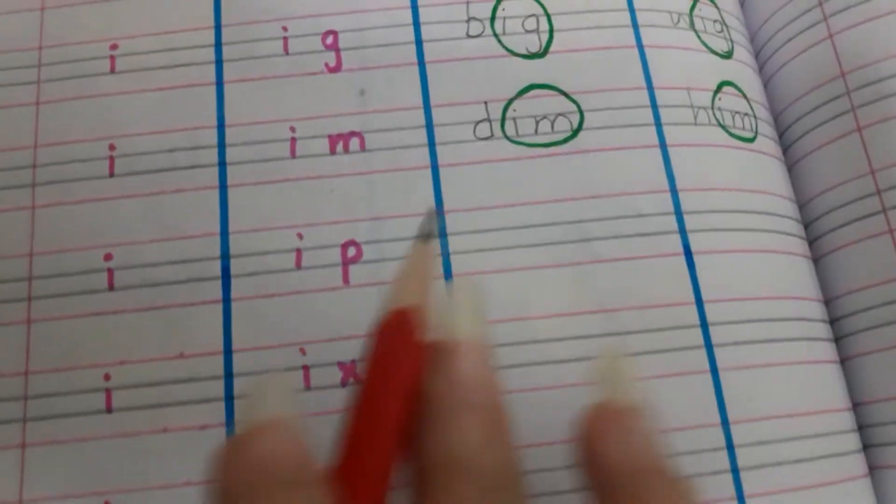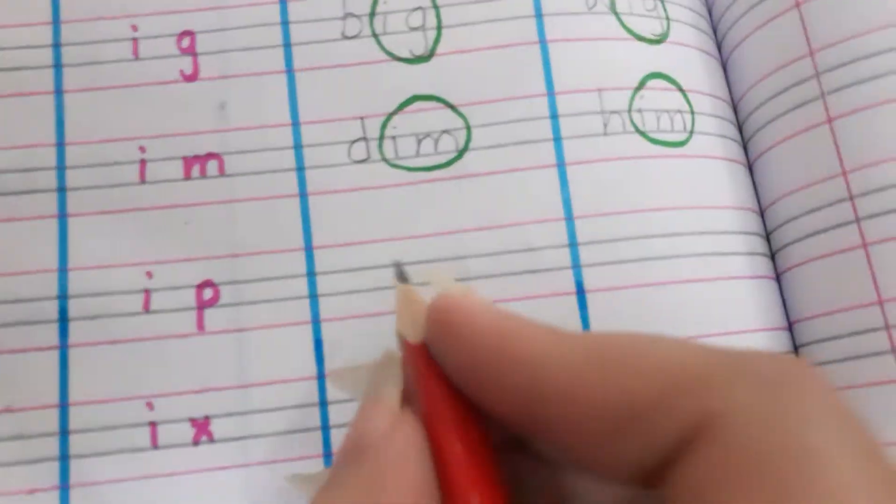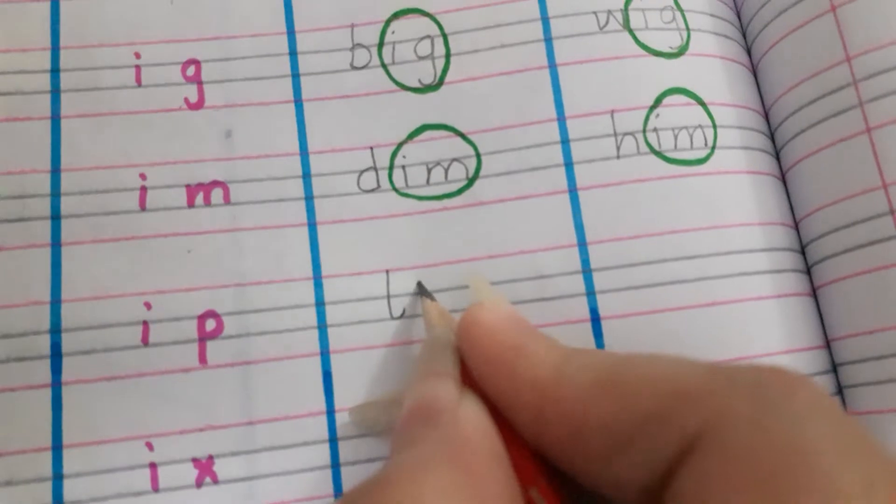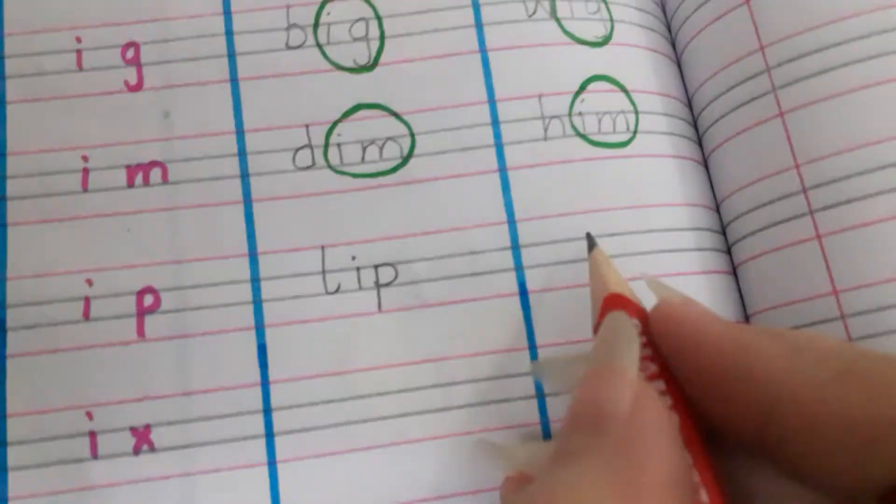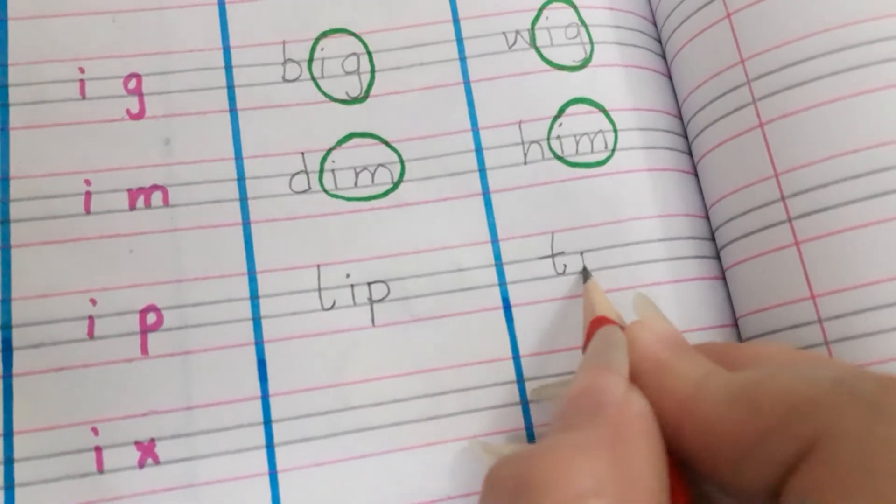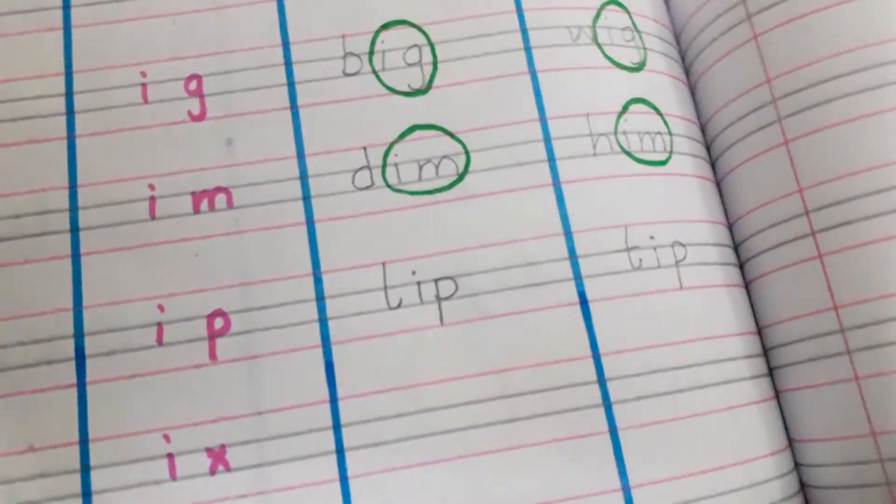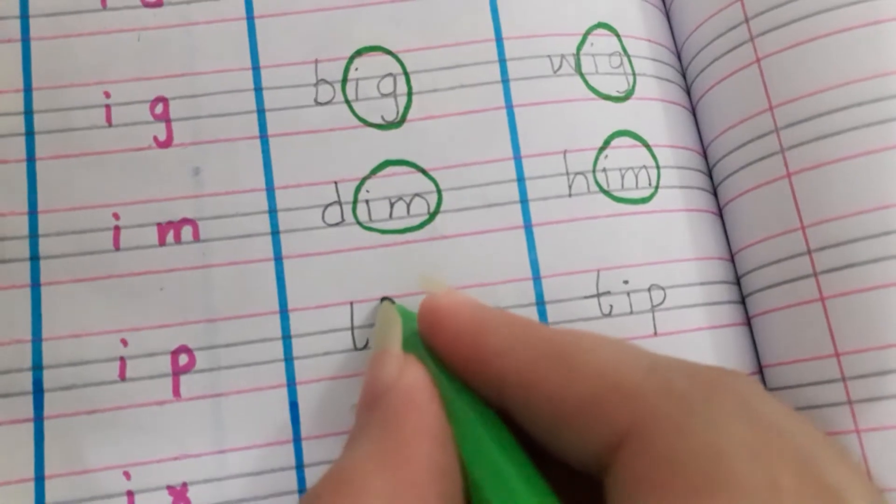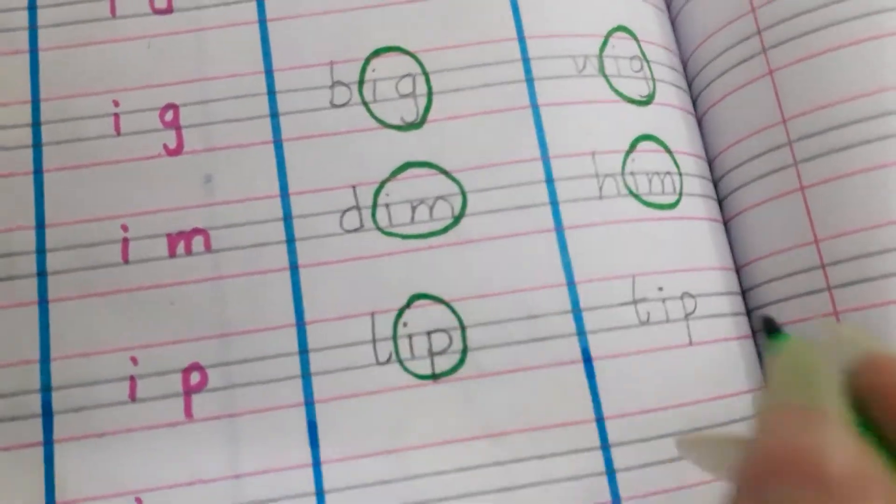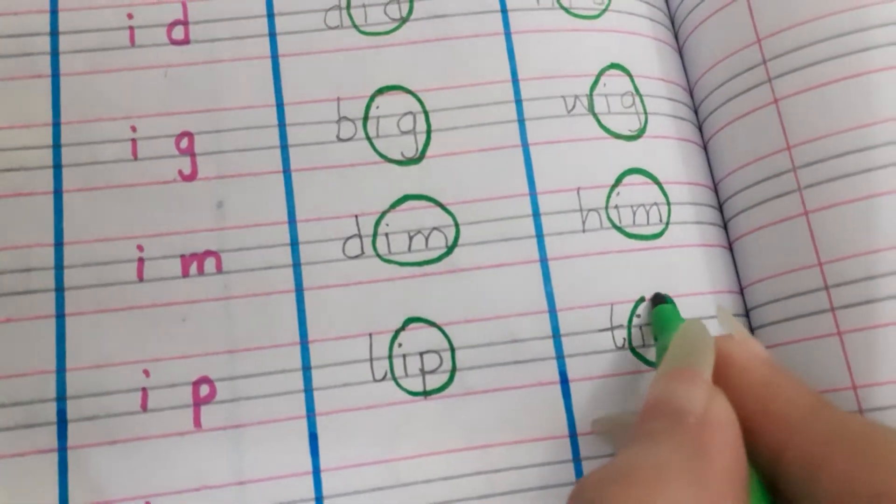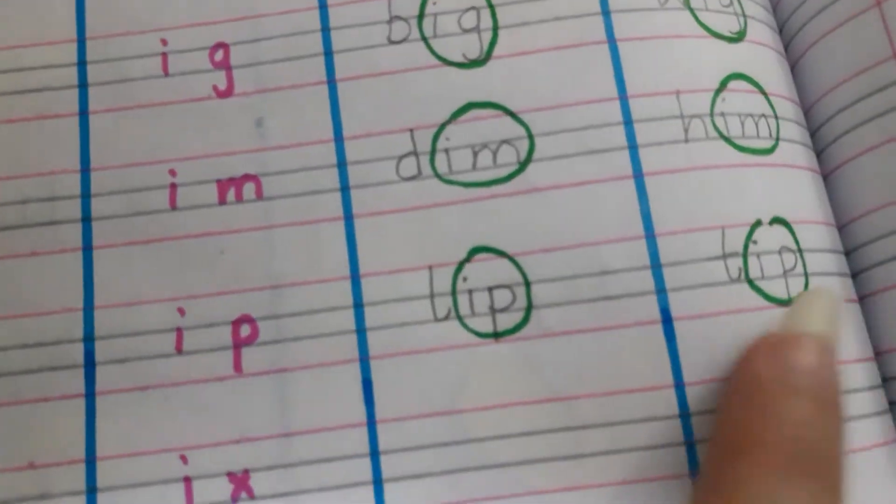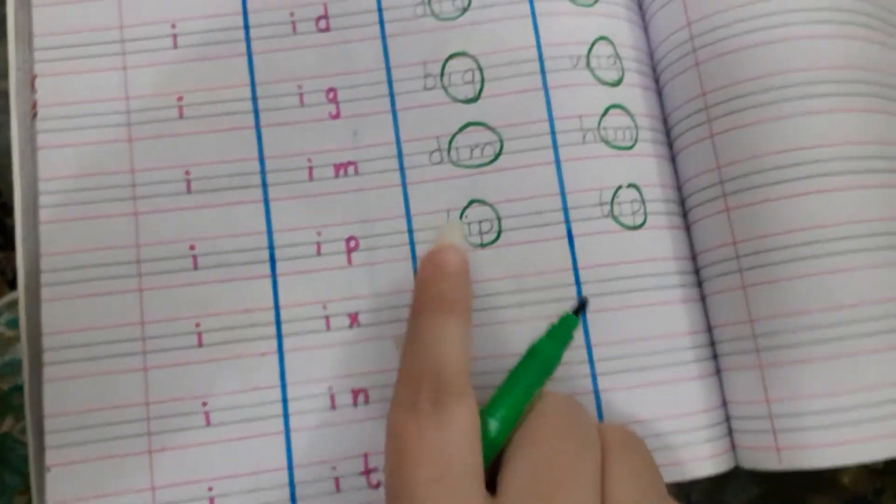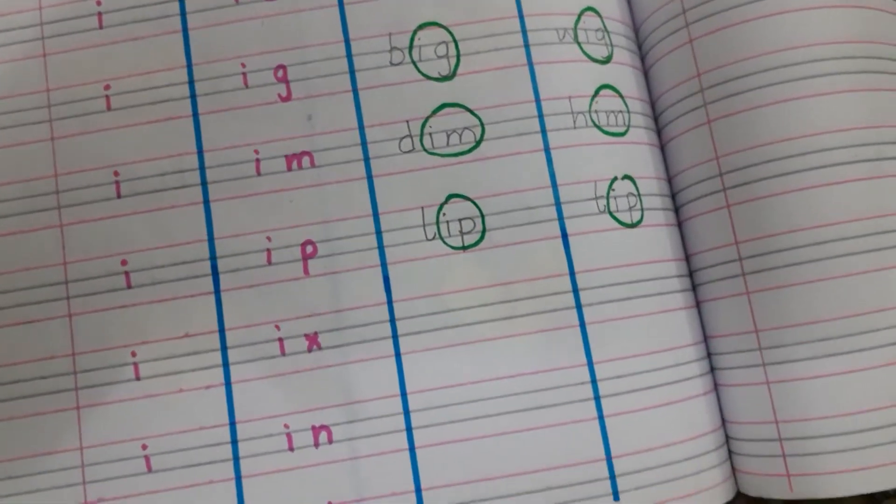Ip. What are the rhyming words? Let's circle the ending sound which are same. Ip, ip. Now read it in a sequence: ip, lip, tip.